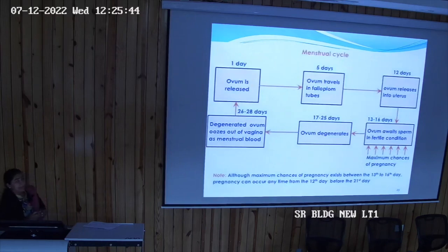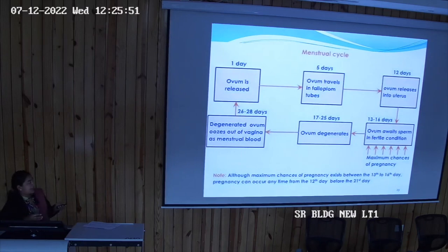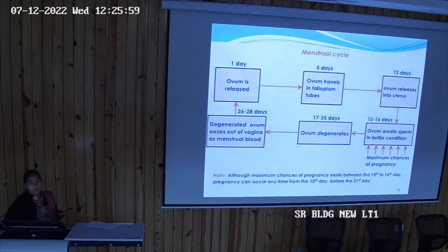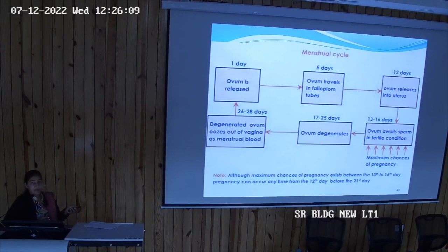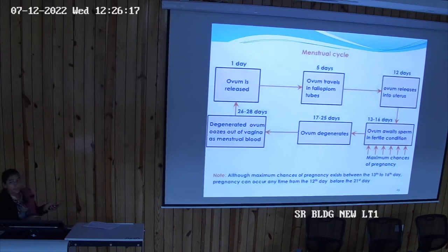The stages of the menstrual cycle: from day one, ovum is released from the ovary. On day five it is taken up by the fallopian tube. At day twelve the ovum releases into the uterus — days thirteen to sixteen is the time of fertilization or infertile condition. Then on days seventeen to twenty the ovum degenerates, and at twenty-six to twenty-eight days this degenerated ovum oozes out of the vagina through the menstrual blood.